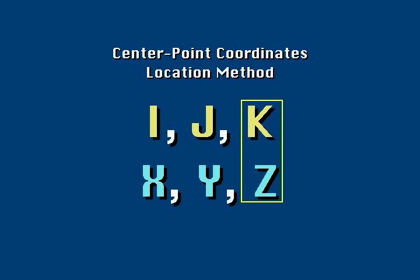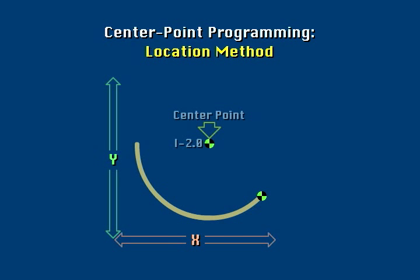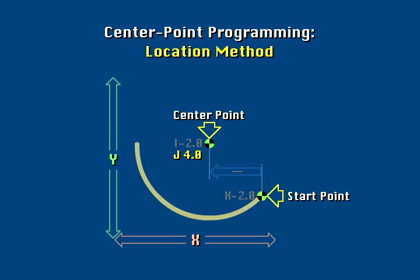For example, if the I value were minus two inches, the location of the center point would be two inches from the start point in the minus X direction. If the J address value were four inches, the location of the center point along the Y axis would be four inches in the plus Y direction from the start point.